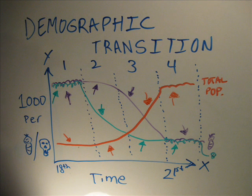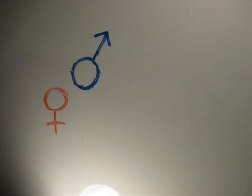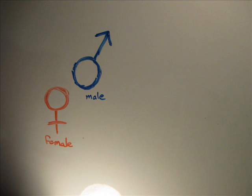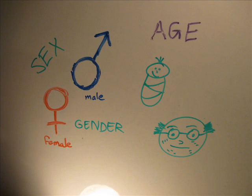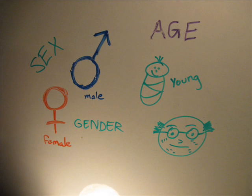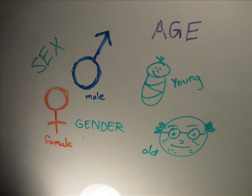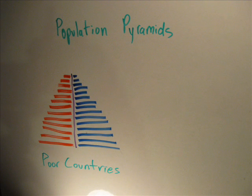Why does population composition matter? Maps cannot reveal two other aspects of populations: the number of men and women, and their ages. Population composition is the structure of a population in terms of age, sex, and other properties such as marital status and education. Age and sex are key indicators of population composition, and demographers and geographers use population pyramids to represent these traits visually.